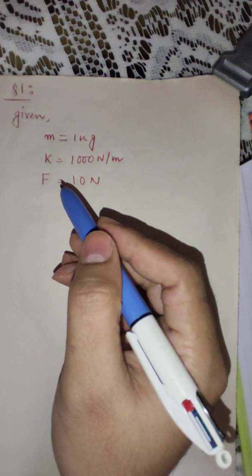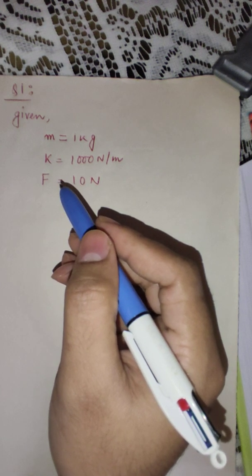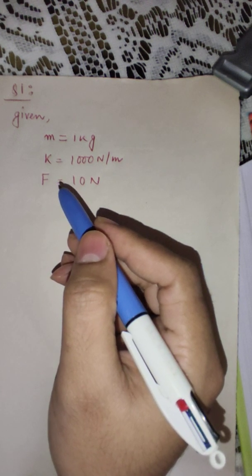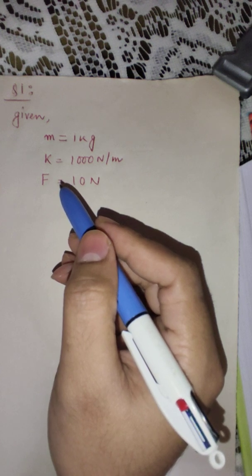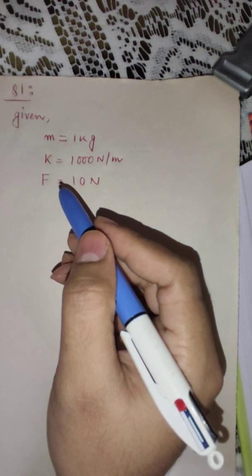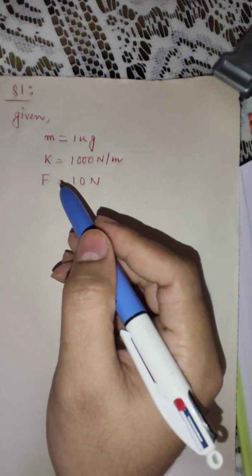Now we are required to determine the resonant frequency, phase angle at resonance, amplitude at resonance, frequency corresponding to peak amplitude, and damped frequency, taking C equal to 40 N per second per meter.